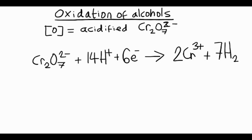Now, that's quite a complicated equation, but we'll look at some features of the equation. Firstly, the color change. So in the dichromate, the chromium gets an orange color, but in the reduced form, it's a green color.